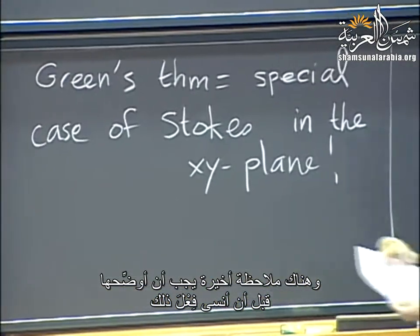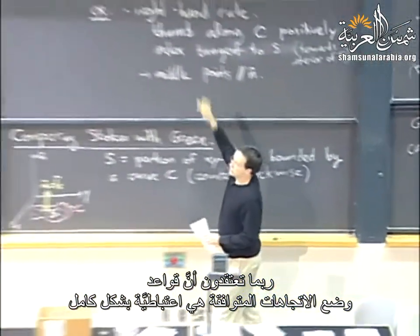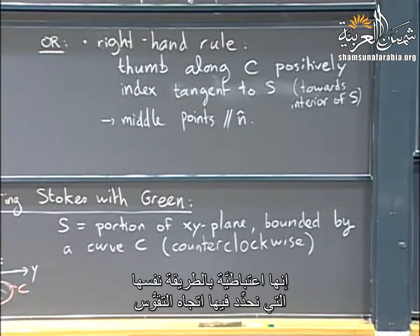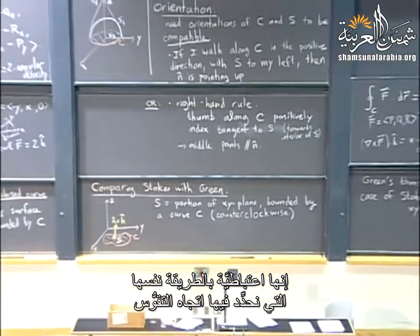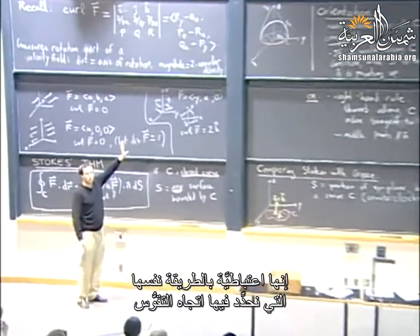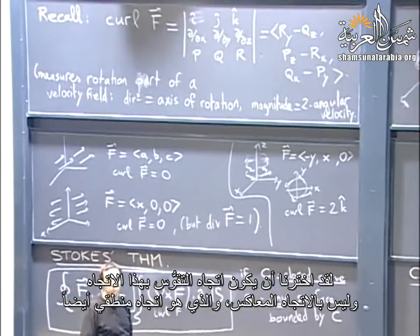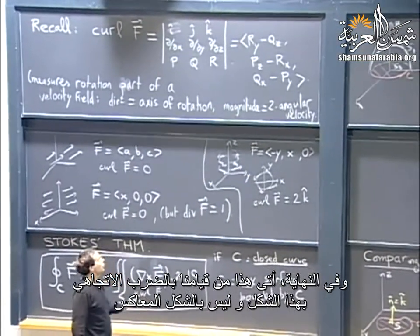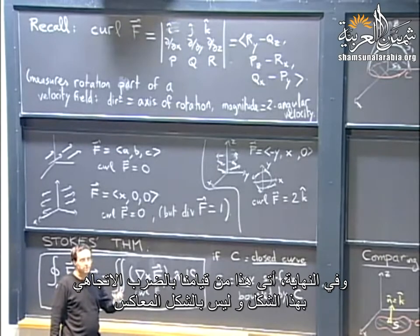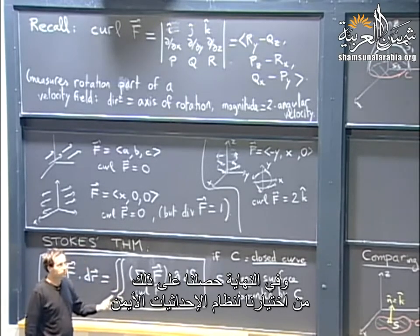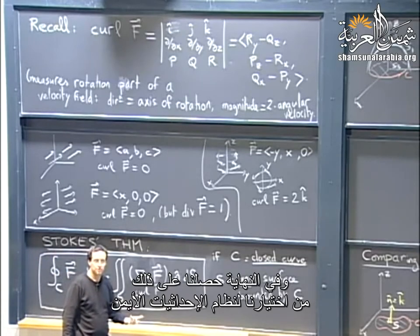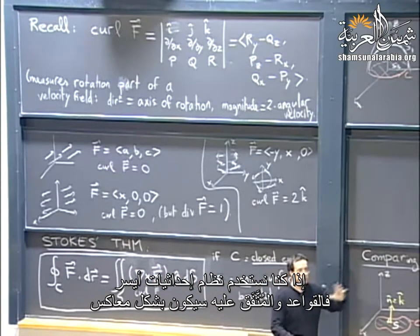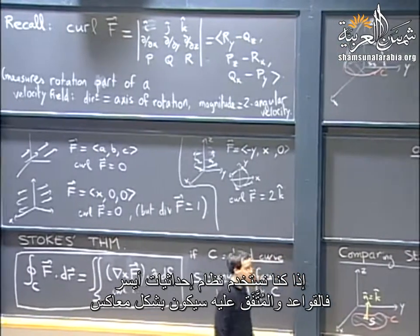A small remark: you might think these orientation conventions are completely arbitrary. They are arbitrary in the same way as our convention for what we call curl — which itself came from our choice of the cross product, which ultimately comes from our preference for right-handed coordinate systems. On a planet with left-handed coordinate systems, all conventions would be the other way around.